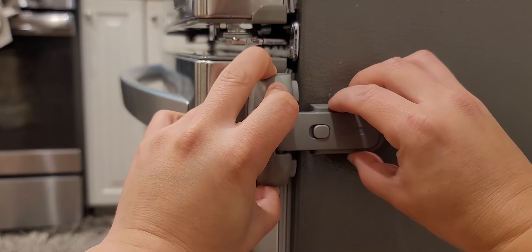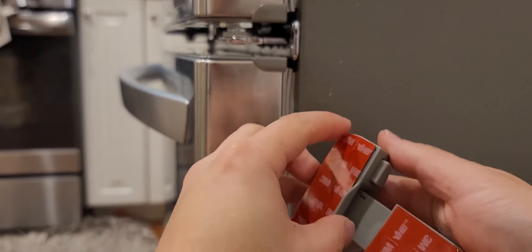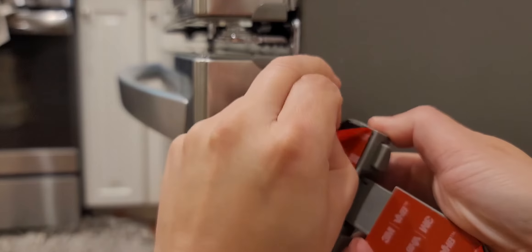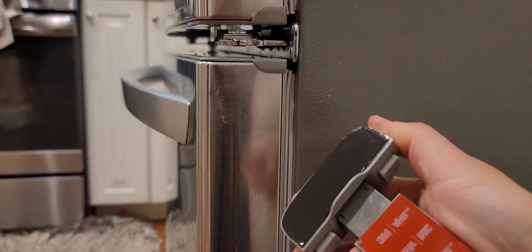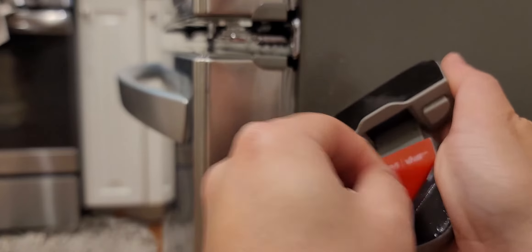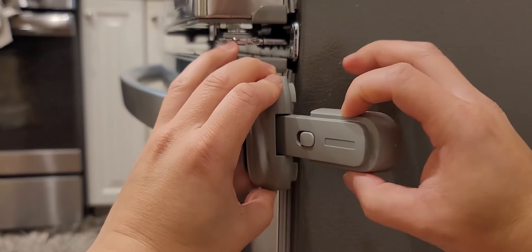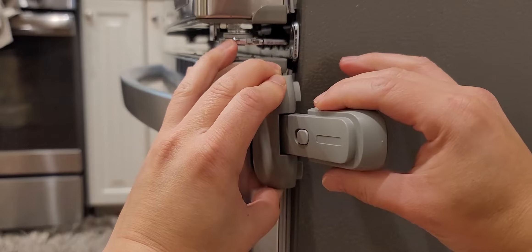And then once you have that situated and you know where you're going to put it, you peel off the 3M tape. And you stick it on. You'll probably want to stick it on the door first.